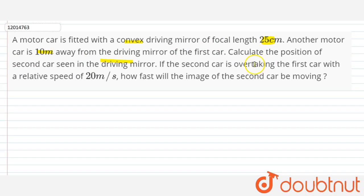And if the second car is overtaking the first car with a relative speed of 20m per second, we have to find out the speed of the image in the first car's mirror.